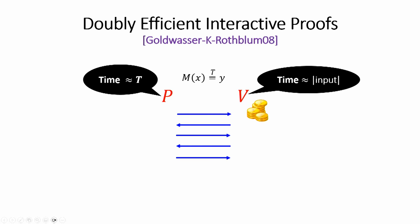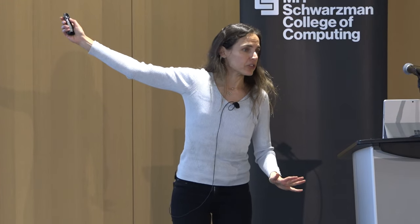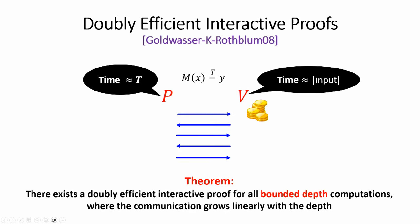So the first thing we want is a doubly efficient interactive proof, where the verifier is very, very efficient, but also the prover cannot just be all-powerful. We want to ensure an interactive proof where, to prove that a Turing machine M on input X outputs Y in time T, the prover convinces the verifier and runs in time not much more than T. In theory we say polynomial T; in practice we want linear in T with good constants. The overhead should be minimal, and the verifier should be very, very efficient.